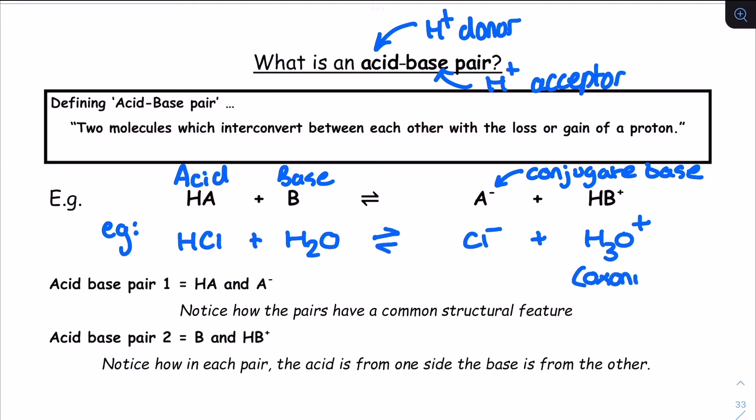As a result, we compare things up from one side of the equation to the other. Take the HCl, for example, here. From left to right, the HCl is donating a proton and it forms a Cl-, which we refer to here as the conjugate base.